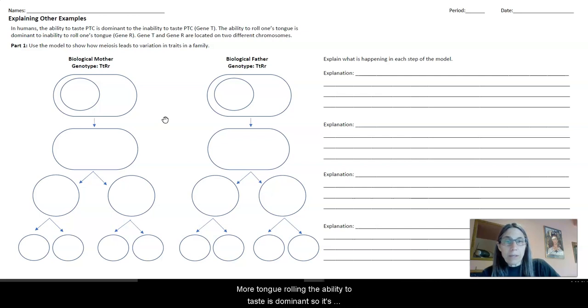The ability to taste is dominant, so it's designated with a capital T, a big T. And tongue rolling, the gene for that is designated by an R. And again, this is another dominant trait, so it is designated as a large R. So let me just quickly go over a couple of pieces of background information that you need to understand in order to be able to work through this problem.